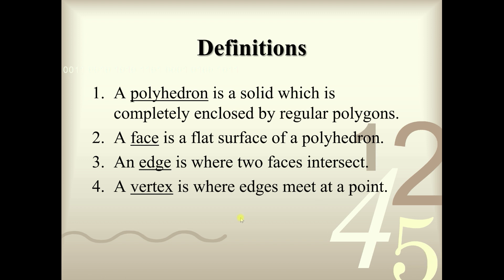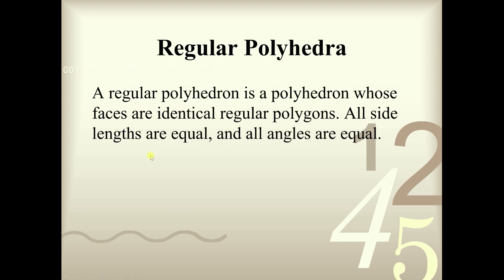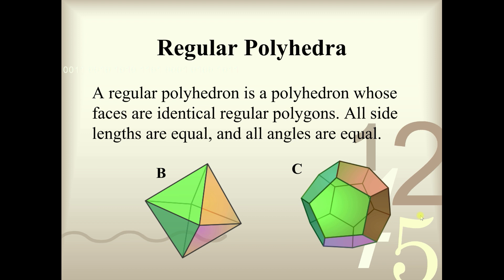Now here comes the interesting part. There's something called a regular polyhedron, very similar to regular polygons. A regular polyhedron is a polyhedron whose faces are identical regular polygons — all side lengths are equal and all angles are equal. This is why we were able to group figures B and C together, because these two figures are regular polyhedra.